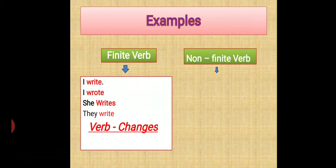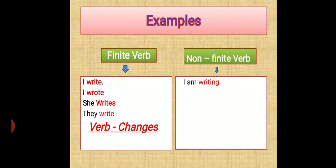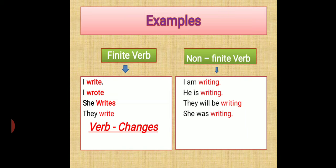Coming to the non-finite verb. Look at the examples: I am writing. He is writing. They will be writing. She was writing. So I, he — 'writing' does not change. They is plural and in future tense, it does not change. She was writing — this is in past tense and again the word 'writing' is not changed. So you can say the verb does not change.